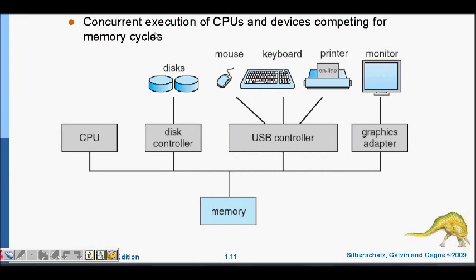Memory is shared — it is where whatever is executed or whatever data you get from, say, your keyboard or mouse at some particular point is stored. All devices are connected to the memory through a common bus where they can store or read data. The monitor connects through a graphics adapter, USB controller handles mouse and keyboard, disk controller controls hard disk access, and the CPU is connected to memory.